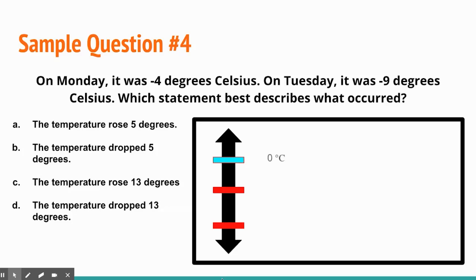So we set up zero degrees. I find negative four, and I find negative nine. So as we can see, it went from negative four down to negative nine. And we know that if a number goes down, the answer, the temperature actually dropped, which means that we can knock off two answer choices right away.